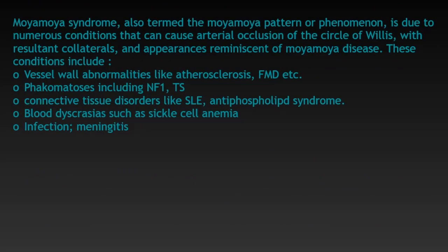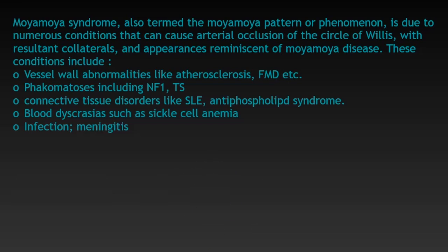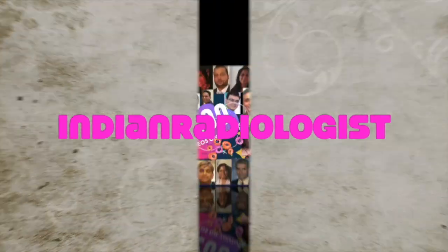Other conditions which can give a similar appearance on imaging should be kept in mind. Moya Moya syndrome, also termed the Moya Moya pattern or phenomenon, is due to numerous conditions that can cause arterial occlusion of the circle of Willis with resultant collaterals and appearances reminiscent of Moya Moya disease. These conditions include vessel wall abnormalities like atherosclerosis and fibromuscular dysplasia, phacomatoses including NF1 and tuberous sclerosis, connective tissue disorders like SLE and antiphospholipid syndrome, blood dyscrasias such as sickle cell anemia, and infections including meningitis.